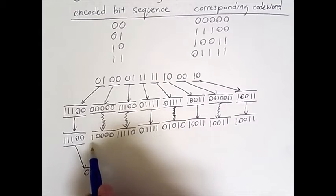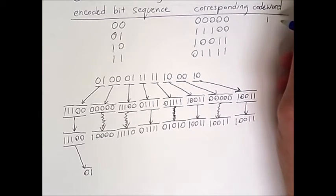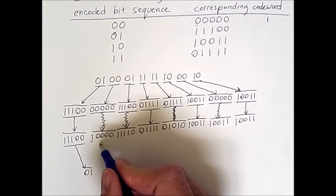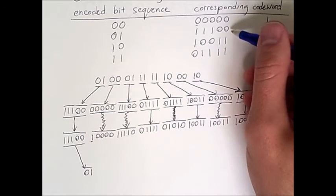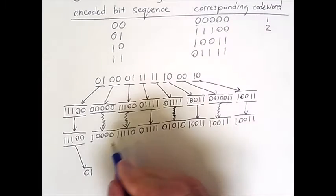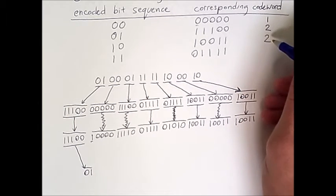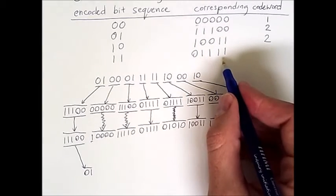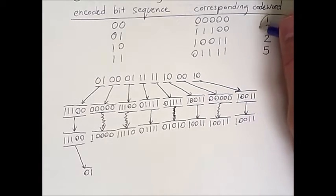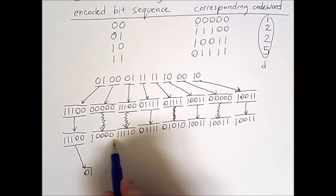So the Hamming distance between this bit string and the first code word is 1, because there's only one bit different between the code word and this actual bit string. The distance between this string and the next code word is 2. From this string to this code word is 2. From this string to this code word the difference is also 2. And from this string to the last code word the difference is actually 5. So these are the Hamming distances between these code words and this invalid code word.